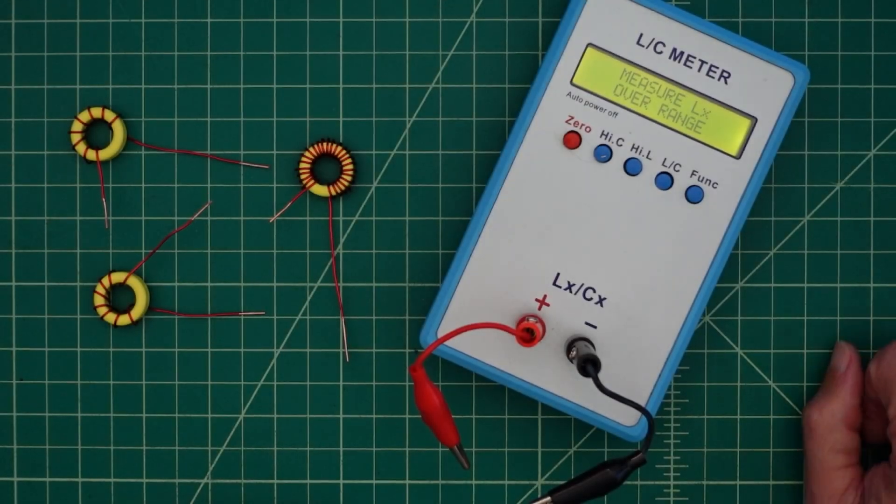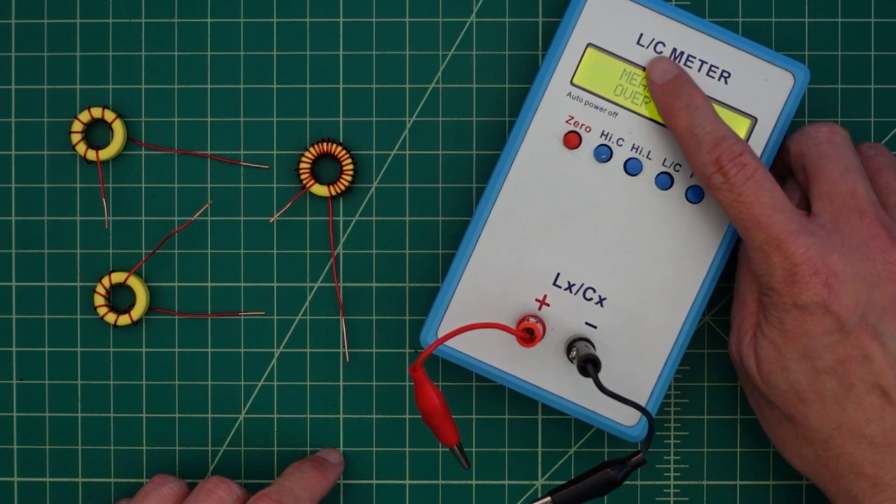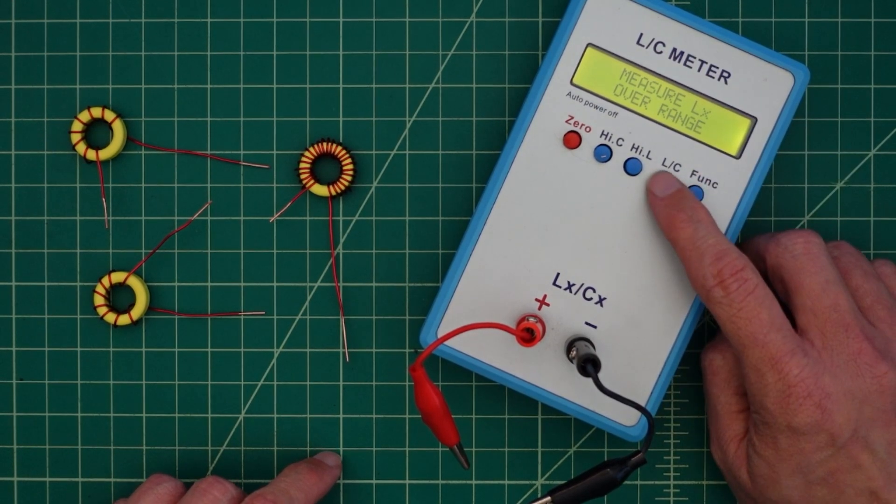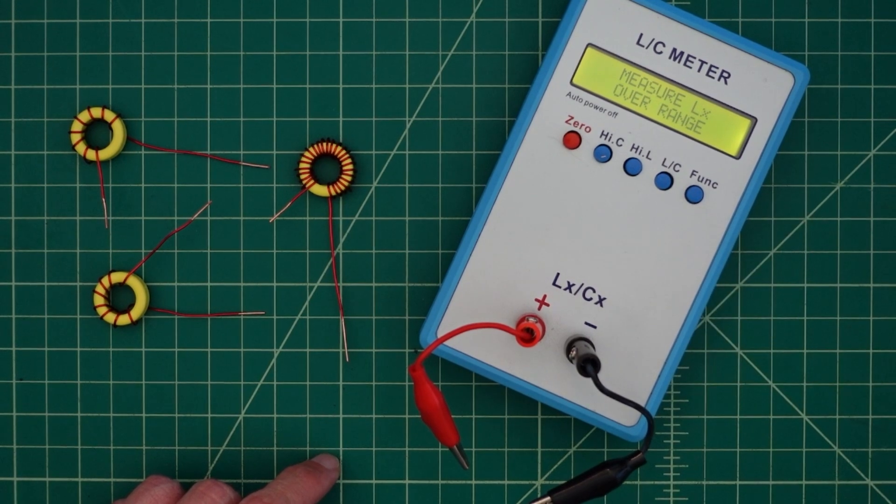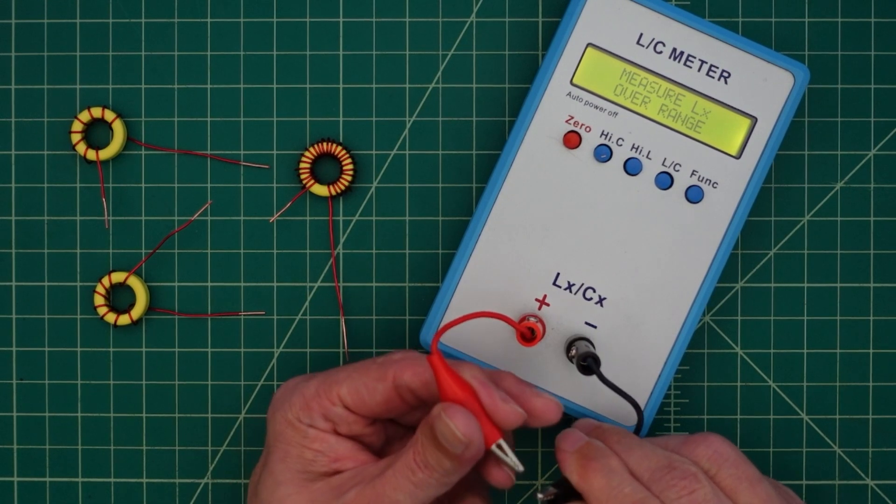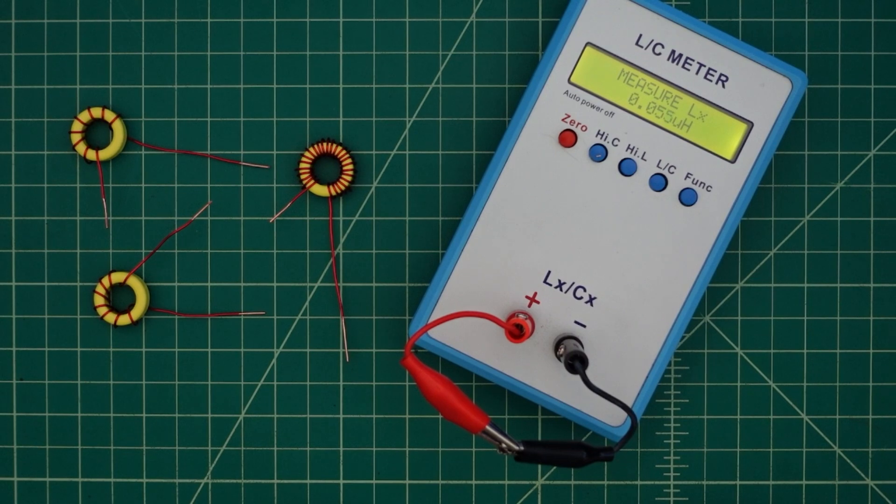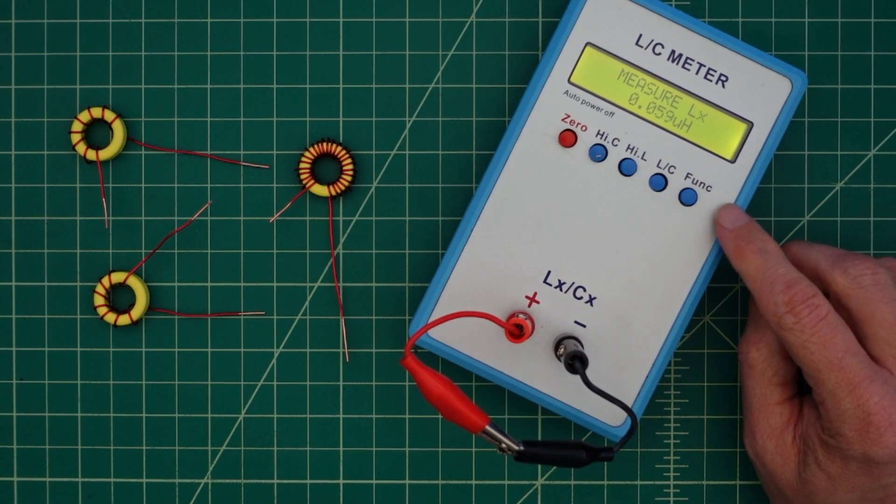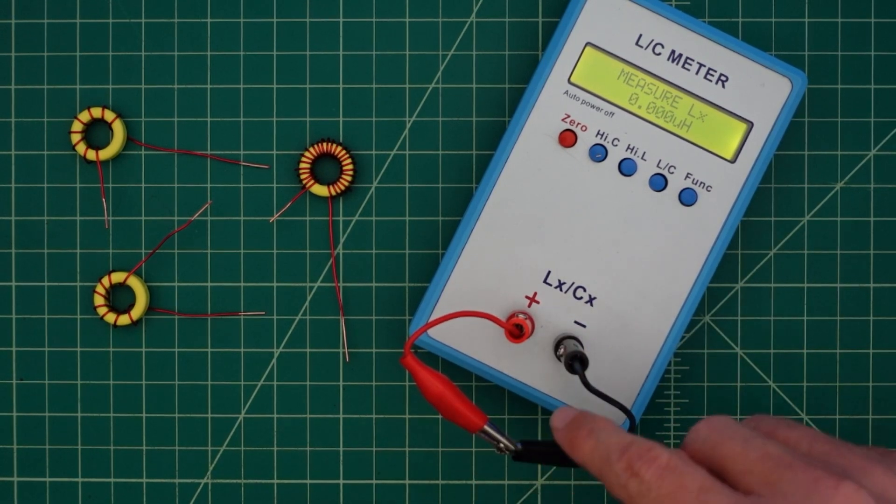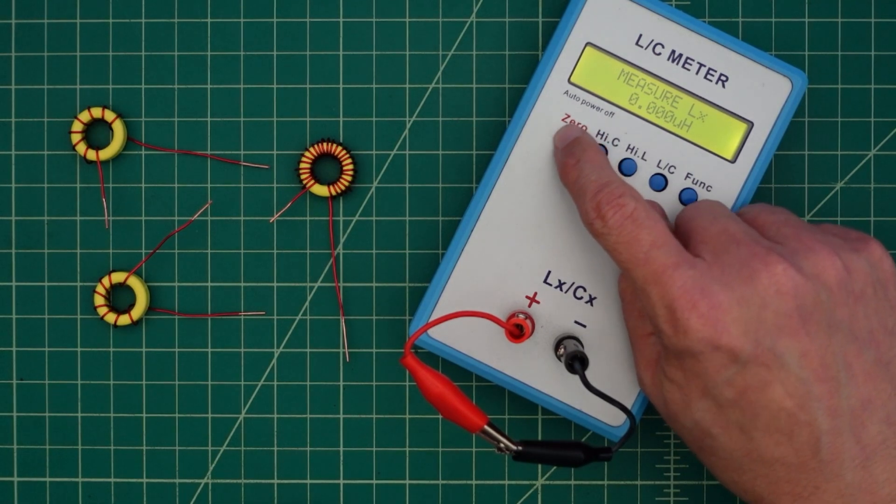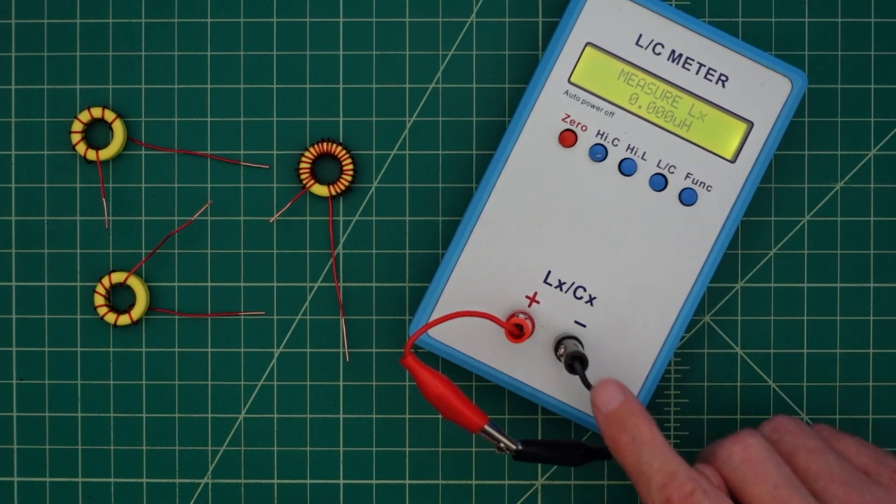So to measure the inductance of our cores here, we're going to use this LC meter. L is for inductance, C is for capacitance. I can switch between my ranges here. I want to come over here to measure for inductance, and I want to connect these two together. You can see it's reading 0.059 microhenries. I want to cancel the inductance of these leads out. Now it's at zero. I can come over here and hit this, and that basically calibrates accounting for the leads.